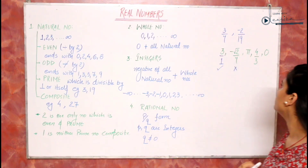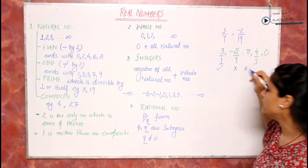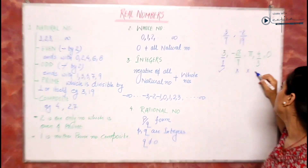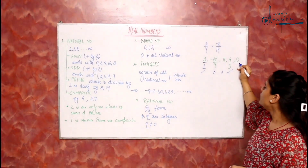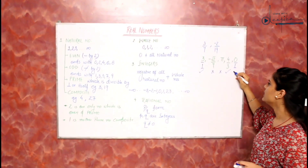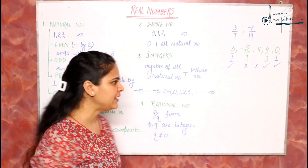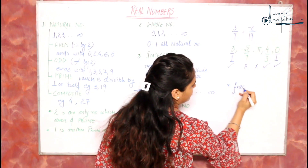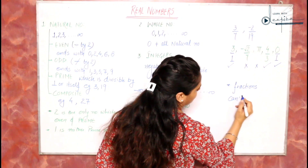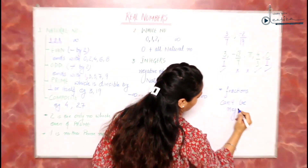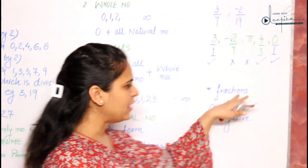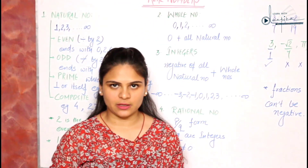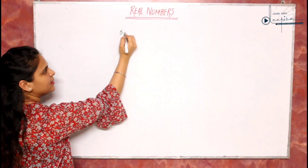Pi is also not a rational number. For 7 by 4 upon 3, both are integers and the denominator is not equal to 0, so yes, it is a rational number. 0 can be represented as 0 by 1, so yes, it is also a rational number. Sometimes we get confused between rational numbers and fractions — the only difference is that fractions cannot be negative. All fractions are rational numbers, but all rational numbers are not fractions.